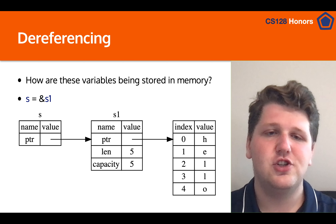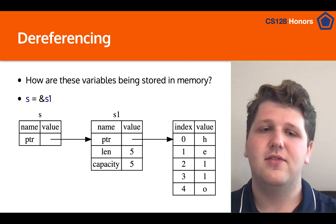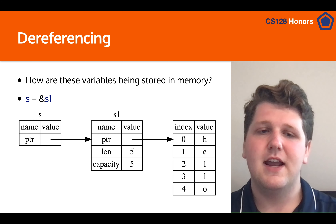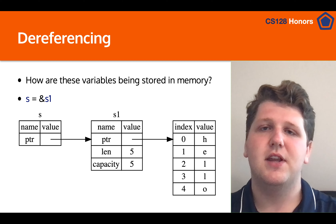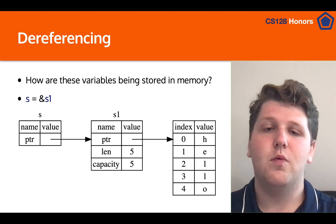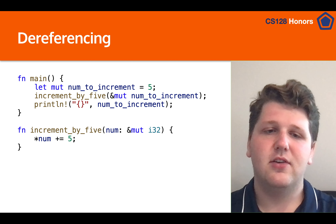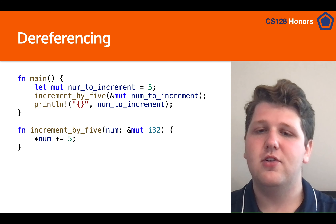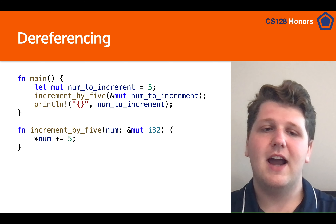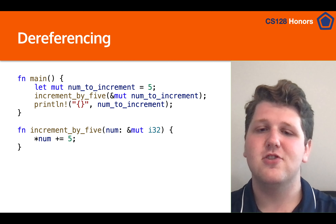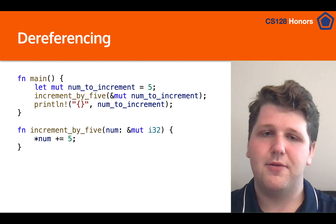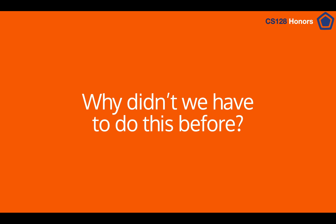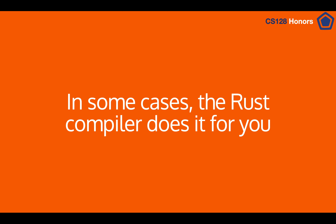Let's talk about dereferencing. When you have s1 and take a reference of it (borrowing), you're saying 'here's where s1 is' — you can access all the underlying data but you're one level above. Sometimes you actually want to operate at the level of s1 to modify something. For example, if I take a reference to an i32, I need to dereference it to modify the integer and not the reference itself. In this case I dereference the int, increase it by 5, and print it out, which prints 10. The reason we don't always have to do this is because in some cases the Rust compiler is already doing this for you — it infers when you want to dereference.